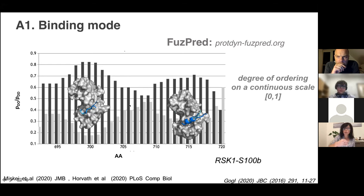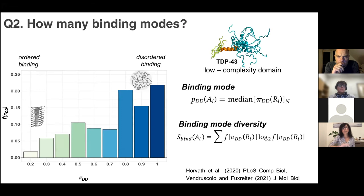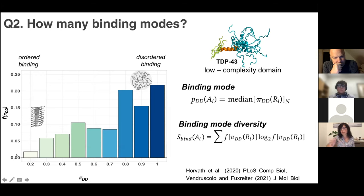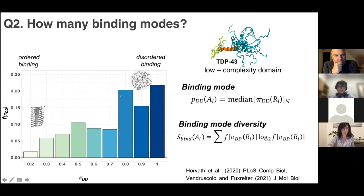Q2: how many binding modes do we have? Let me illustrate this on the TDP43 low complexity domain. On the x-axis I put all these different binding modes—the extent of ordering—and the scale here goes from disorder-to-disorder. I count the residues and possibilities computationally: what would be the probability to sample a certain binding mode? Here you have a distribution of the different binding modes—on the right side it's all disordered, here it's more ordered.